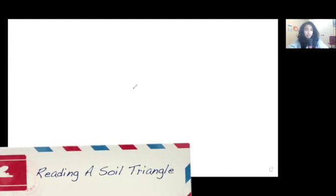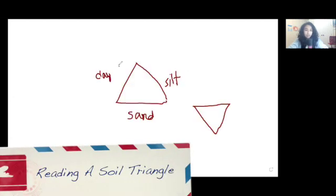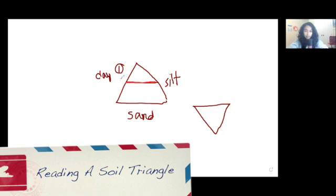Let's read a soil triangle. You always, always, always want to start with the clay. You start with the clay and you go this way, vertically. So here, let's say we know that clay is 50%. This is 50%. Go this way.